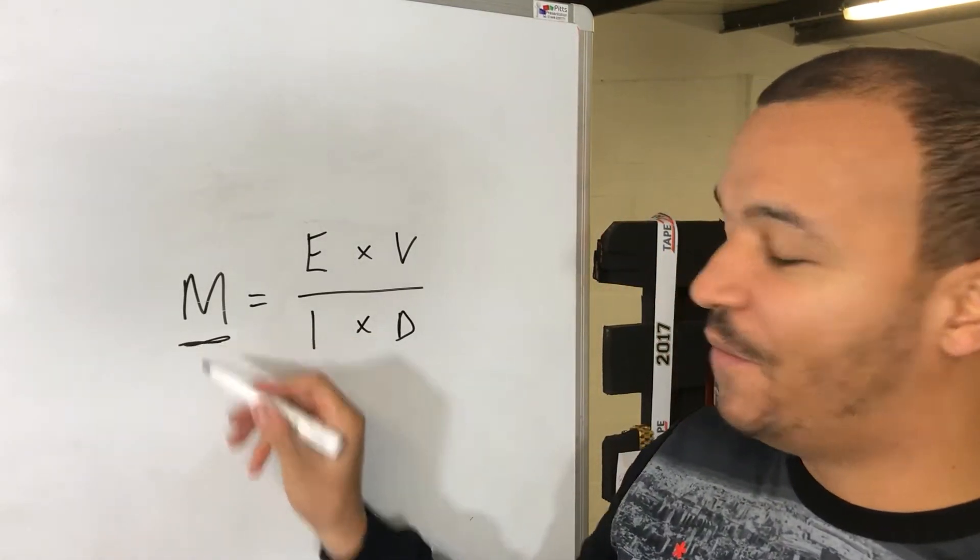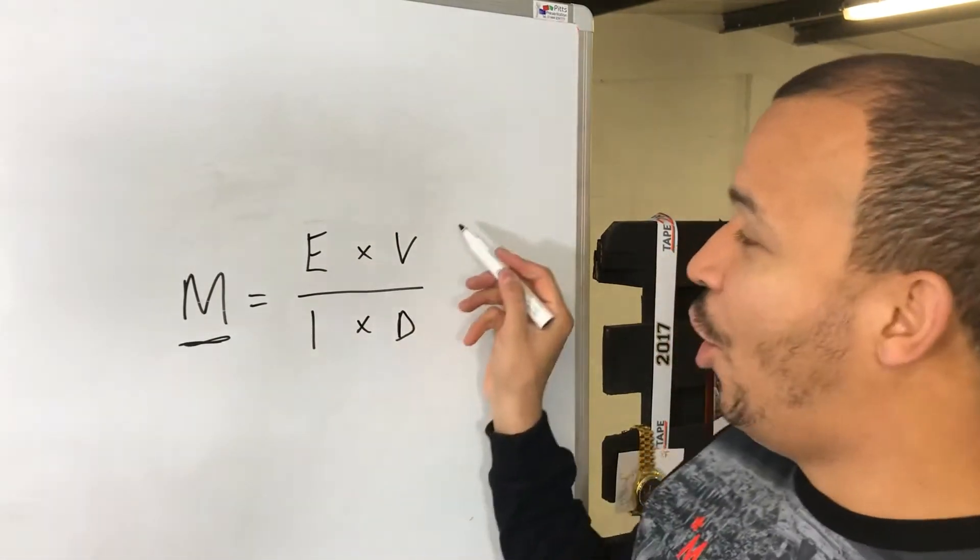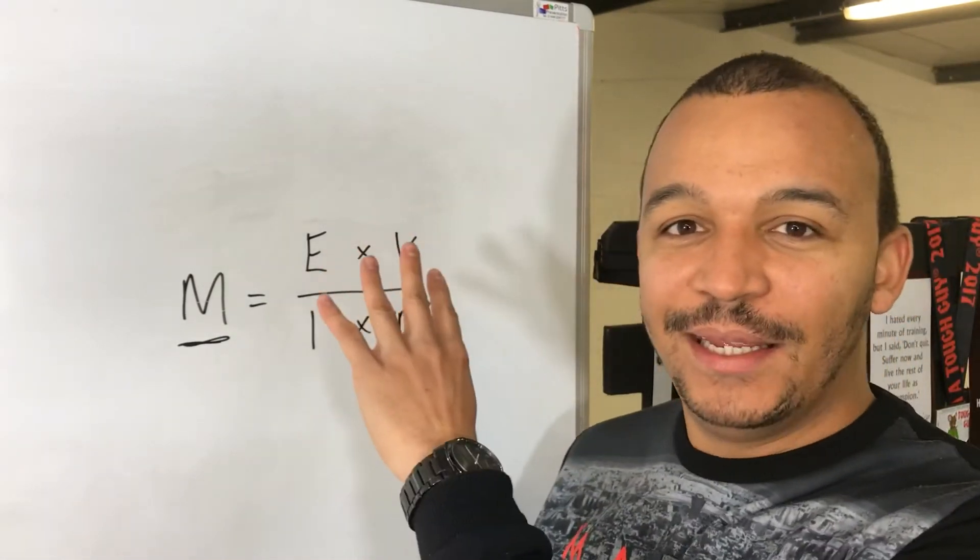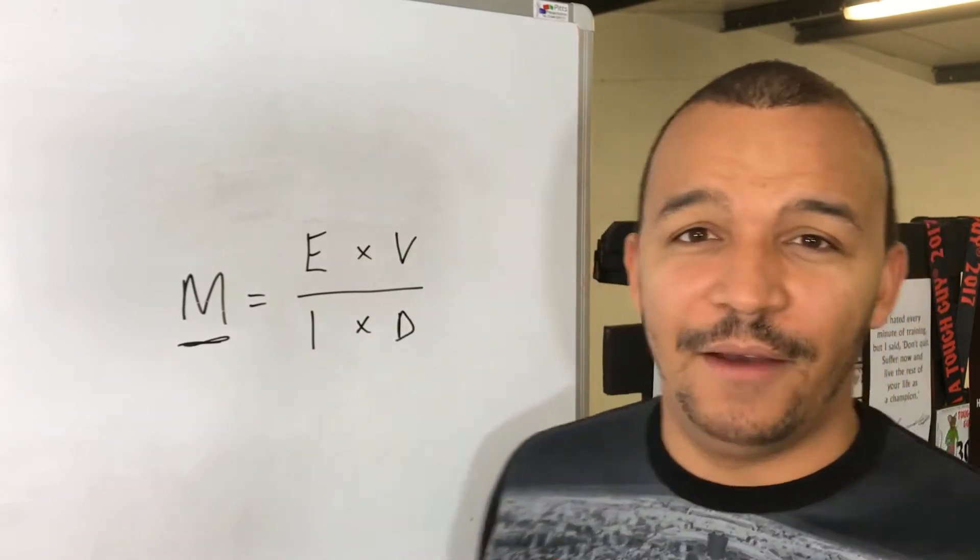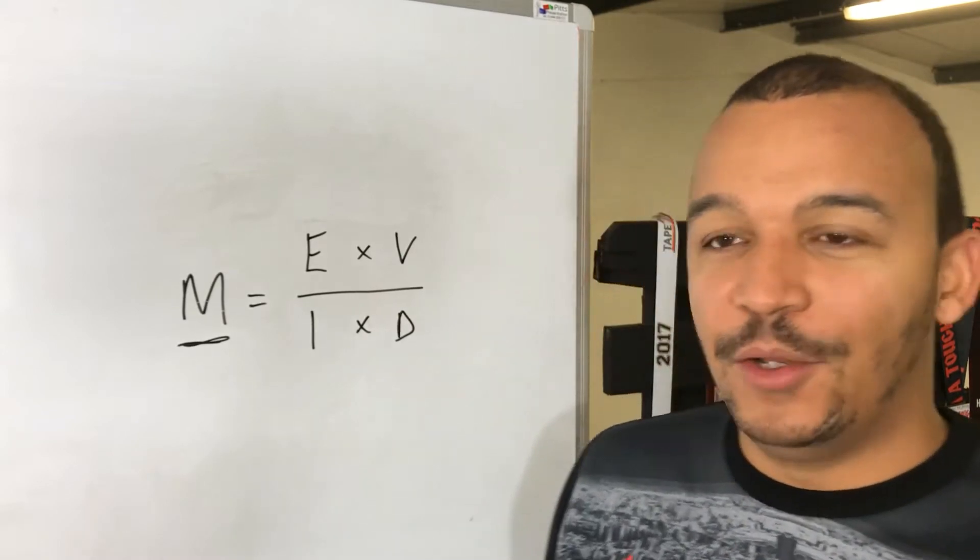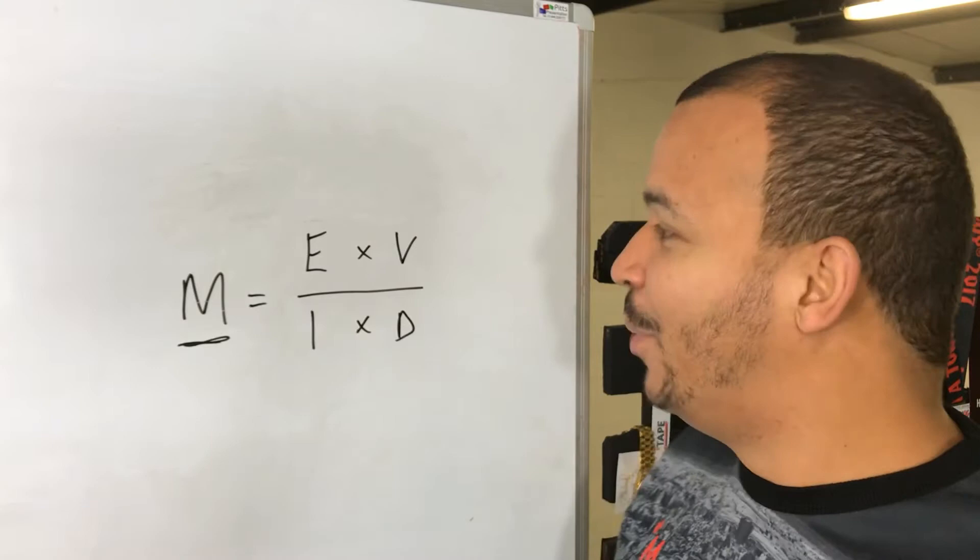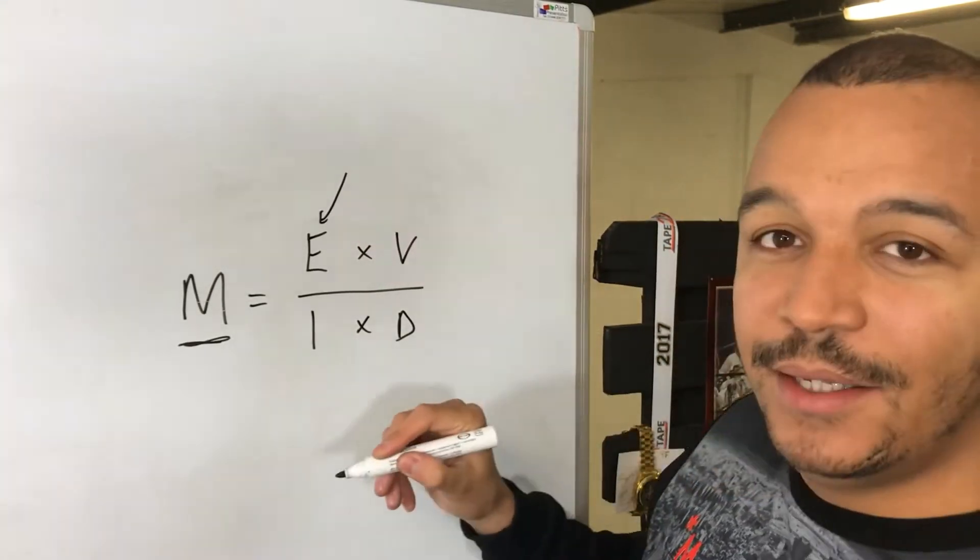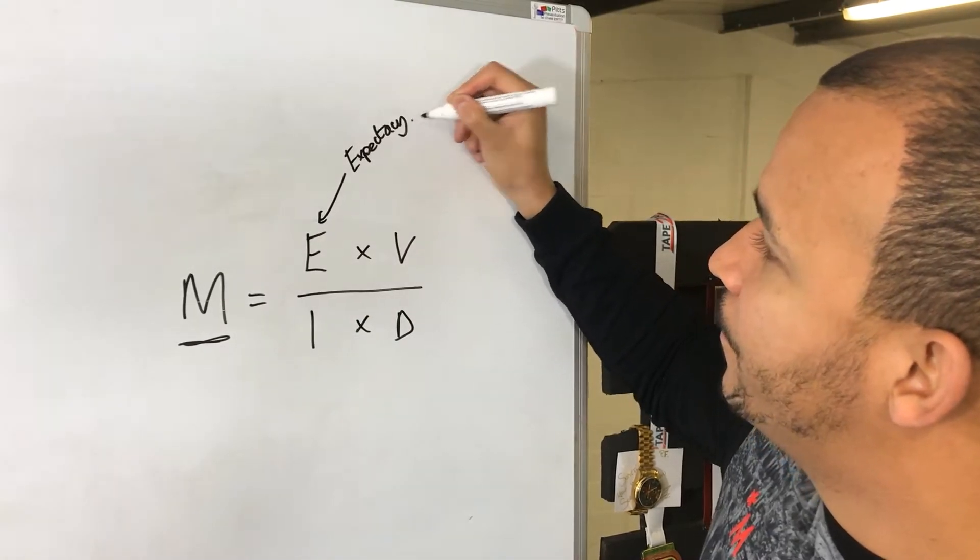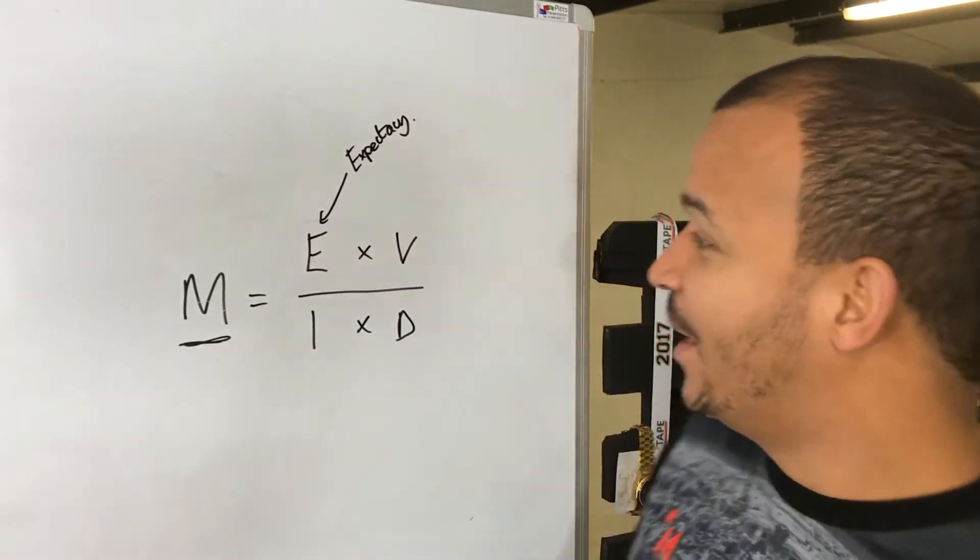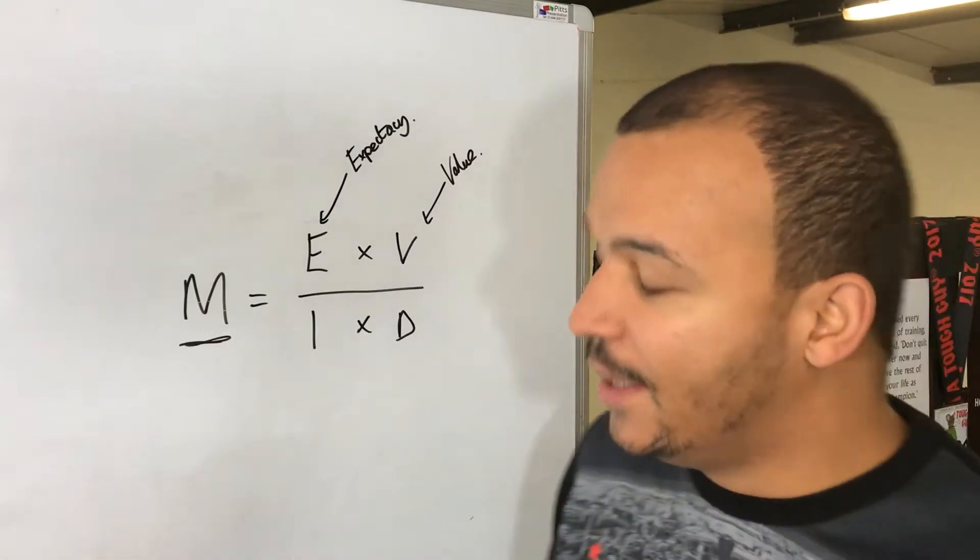This M equals motivation. If you can make the top number really big and the bottom number really small, you then have huge amounts of motivation. I'm not going to talk about numerators, denominators, and the ins and outs of math here, but this E stands for expectancy, and this here stands for value.